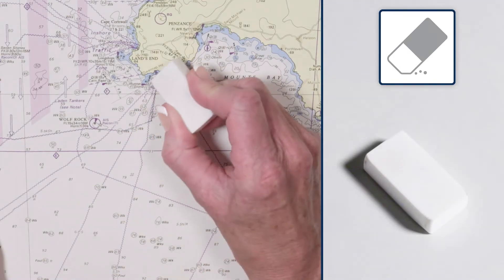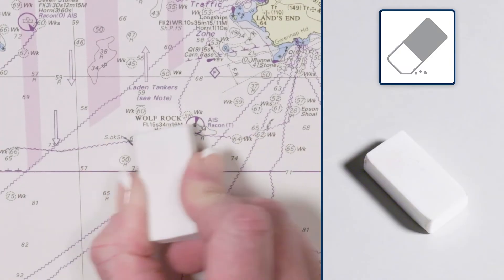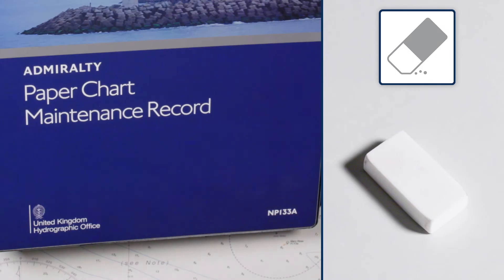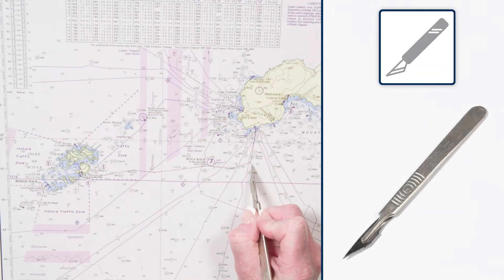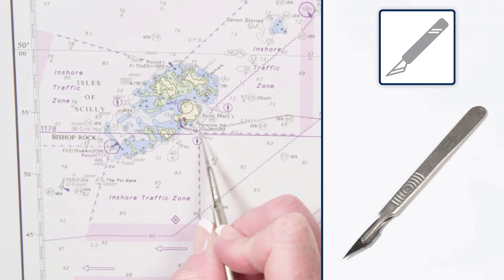Use an eraser to rub out pencil guidelines on charts or insertions in the paper chart maintenance record NP133A. Alternatively, a scalpel can also be used to scratch out detail if you happen to make a mistake.